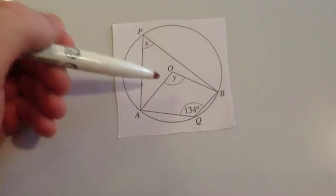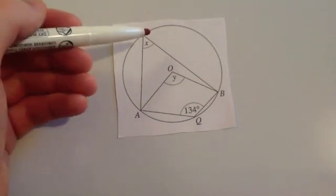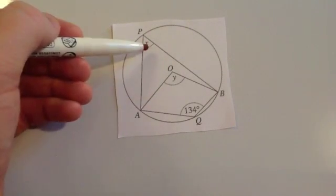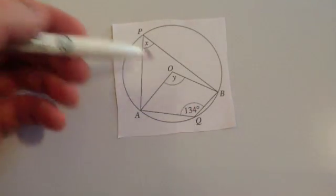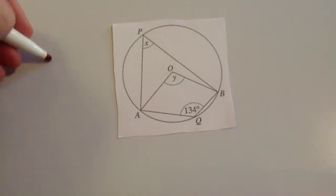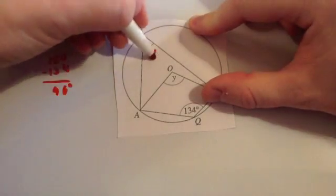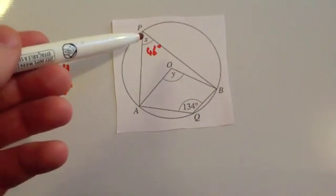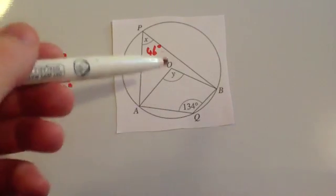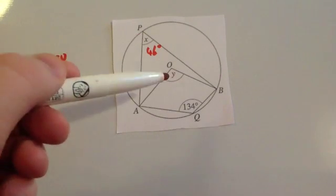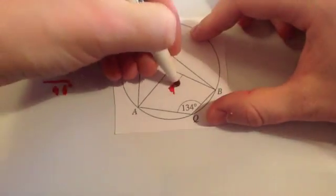Here we've been asked to calculate X and Y. Notice there is a cyclic quadrilateral, and also an angle at the centre and an angle on the circumference. X and 134 add to 180 because of the cyclic quadrilateral — circle theorem 4. So 180 take away 134 gives 46 degrees; X is 46 degrees. X is on the circumference and Y is at the centre, so the angle at the centre is double: doubling 46 gives Y equal to 92 degrees.